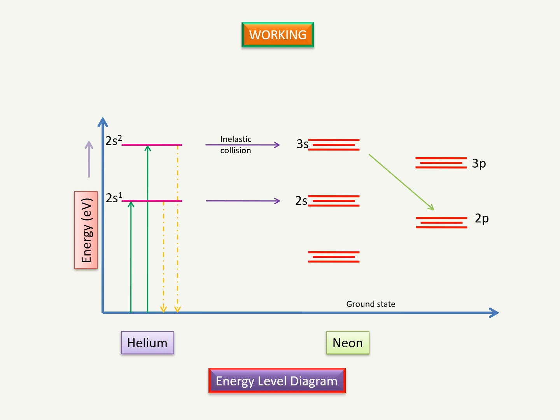Stimulated emission takes place between 3s and 2p emitting 6,328 angstrom of radiation. Stimulated emission between 3s and 2s to 3p gives 3.39 micrometer of radiation. Stimulated emission between 2s to 2p gives 1.15 micrometer of radiation.